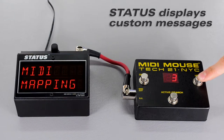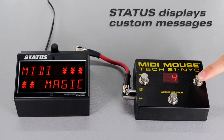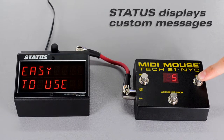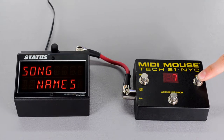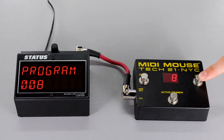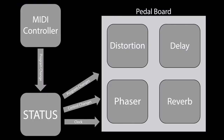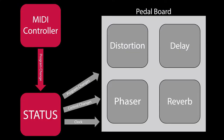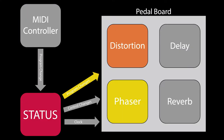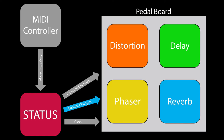Status displays custom messages in response to program changes from any MIDI controller. When Status gets a program change, it also sends up to 5 new program changes on different channels to recall presets, and 16 control changes to modify individual effect parameters.